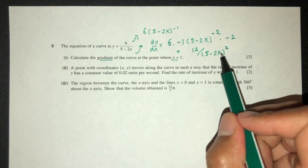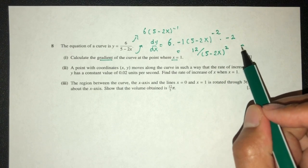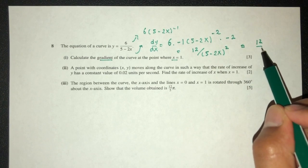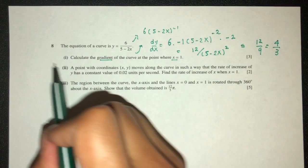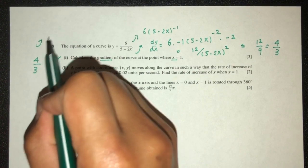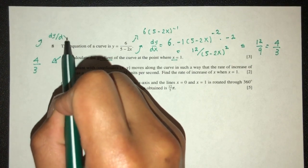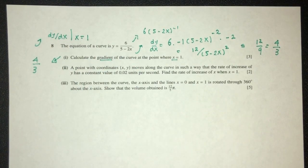At the value x=1, replace 1 here. So 5 minus 2 should be 3. 3 squared is 9. That will be 12/9, which is 4/3. So the gradient at the point x=1 is 4/3. We found this by first finding dy/dx and then replacing the value of x by 1. That is part one of the question.